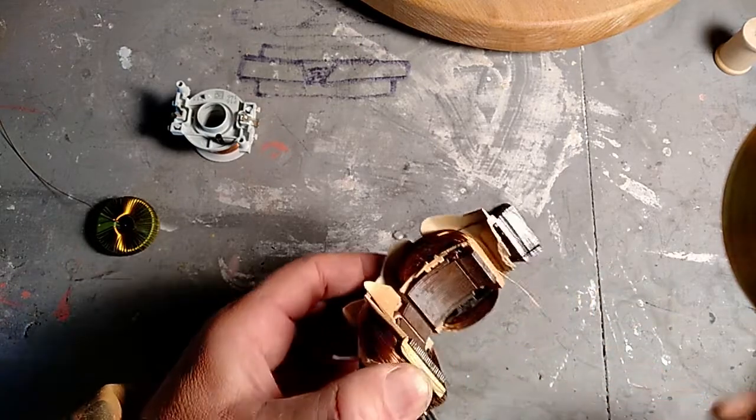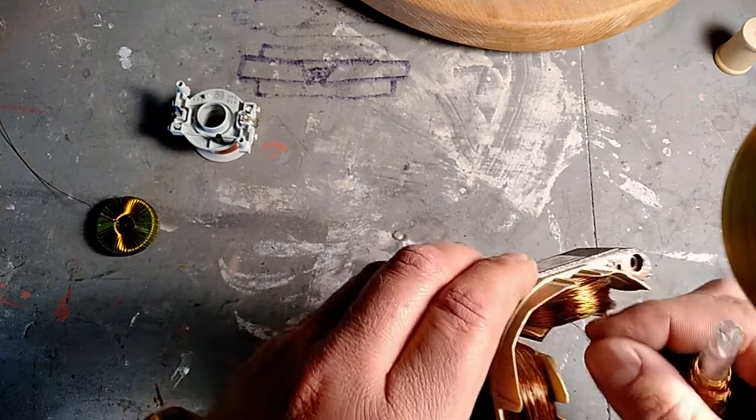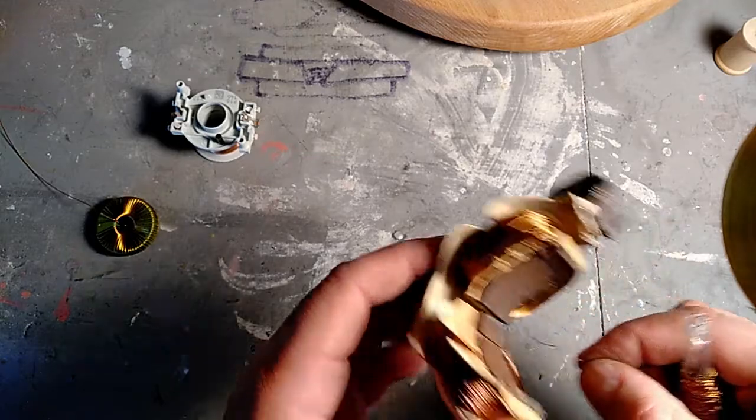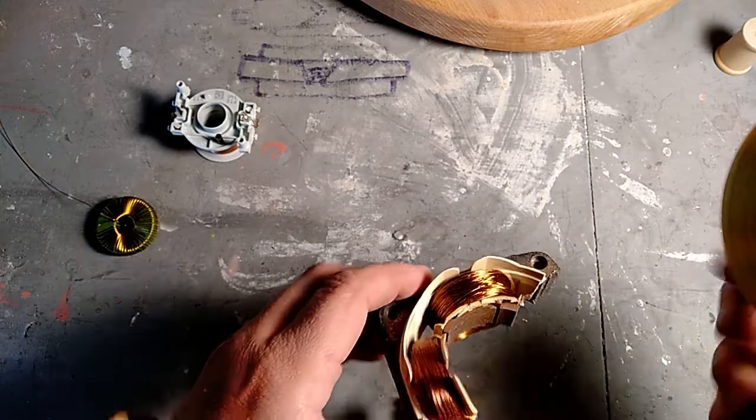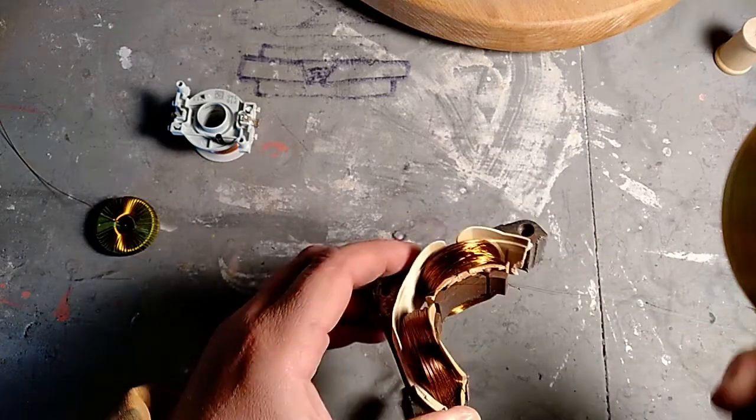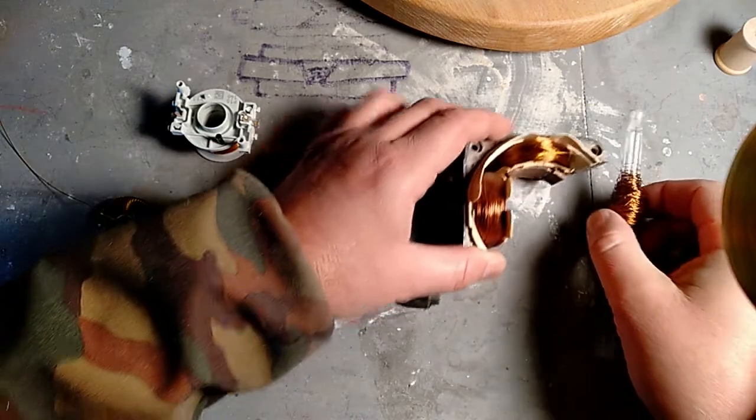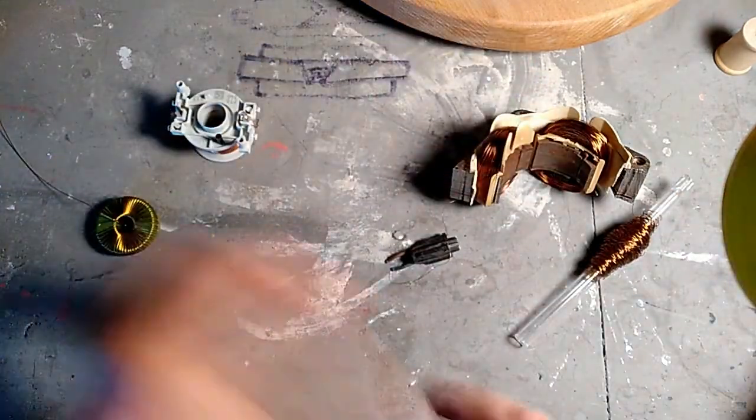Si trova il filo smaltato con cui fare dei progetti. Si può reperire recuperandolo da vecchi apparati che non servono più, tipo per esempio lo statore di questo vecchio motore, oppure